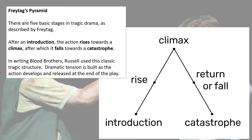Here is a simple model of Freytag's pyramid. It has five basic stages: an introduction, after which action is rising towards a climax, and then falling again towards a catastrophe.